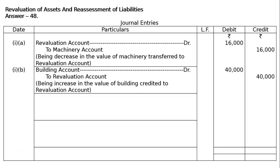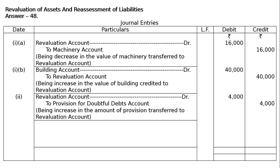Second Part: A provision to be created for Doubtful Debt at the rate of 5% of debtors amounting to 80,000. That is 80,000 multiplied by 5% equals 4,000. Revaluation Account debited Rs. 4,000 to Provision for Doubtful Debt Account Rs. 4,000. Being increase in the amount of provision transferred to Revaluation Account. This is debited to Revaluation Account because it is an expenditure for the firm. All expenses are debited to the Nominal Account, also called Profit and Loss Adjustment Account or Revaluation Account.